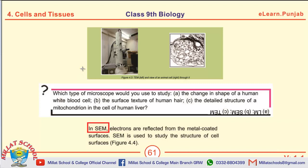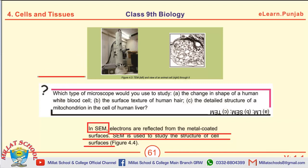This page is the continuity of the last page. With reference to types of electron microscopes, we discussed TEM on the previous page, and on this page we can see SEM — in SEM, electrons are reflected from metal-coated surfaces. There is a question on the top that can also be asked in the examination. So students, we have discussed the first part of chapter number 4, Cells and Tissues. In the next topic we shall discuss part number 2. Till then, Allah Hafiz.